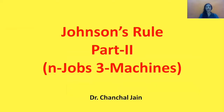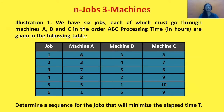Hello friends. In this video I will discuss Johnson's rule. This is part two of Johnson's rule, in which I'll discuss the n jobs three machines case. To understand the sequencing of n jobs on three machines, let's take one illustration. We are given six jobs which we need to perform on three machines, and their respective processing times on all three machines are given in the table. We need to find the optimal sequence of these six jobs, the minimum elapsed time, and the idle time for all three machines.